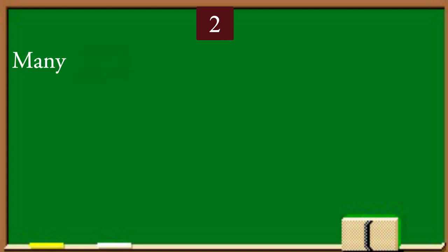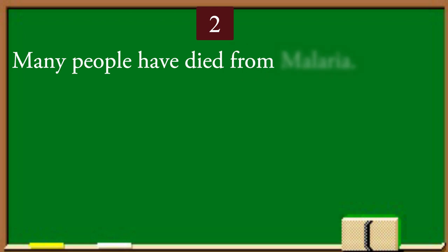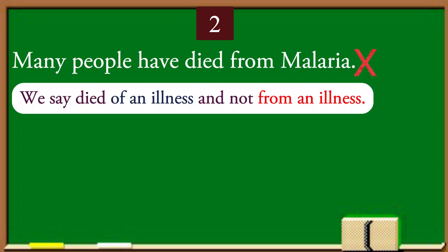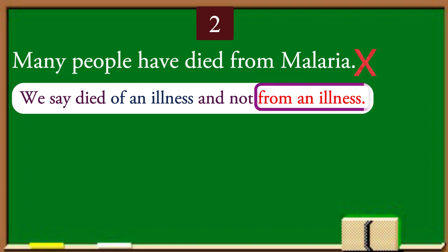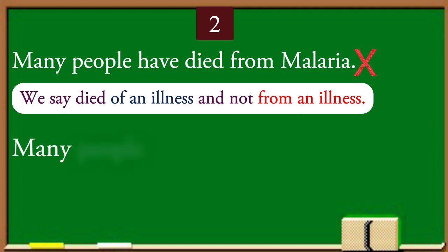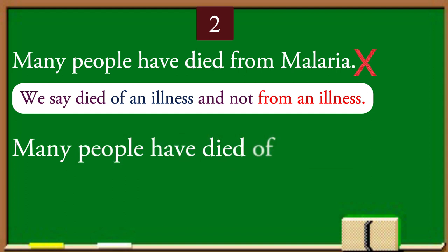Number 2 is: many people have died from malaria — this is incorrect. We say people die of an illness, and not from an illness. I am reading the correct sentence, please repeat after me: Many people have died of malaria.